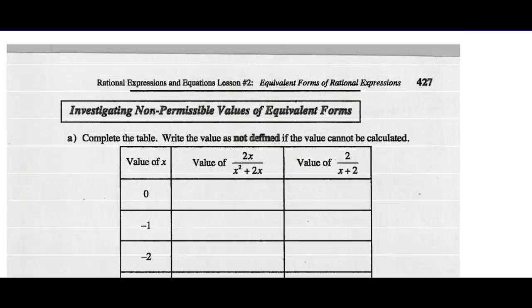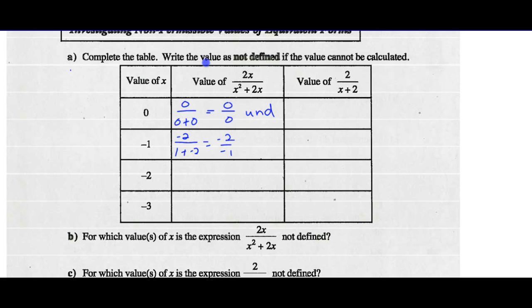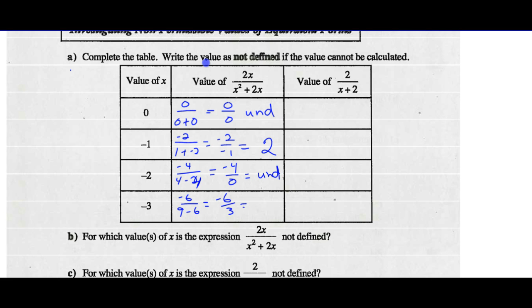Let's look at some more values for x. When x is 0, we get 2 times 0 over 0 squared plus 2 times 0 — we get 0 over 0, which is undefined. When x is negative 1: 2 times negative 1 is negative 2 over negative 1 squared plus 2 times negative 1 is negative 2 — so we get negative 2 over negative 1 plus negative 2, which gives a value of 2. When x is negative 2: negative 4 over 4 minus 4 gives negative 4 over 0 — that's undefined. At negative 3: negative 6 over 9 minus 6 gives negative 6 over 3, which is negative 2.